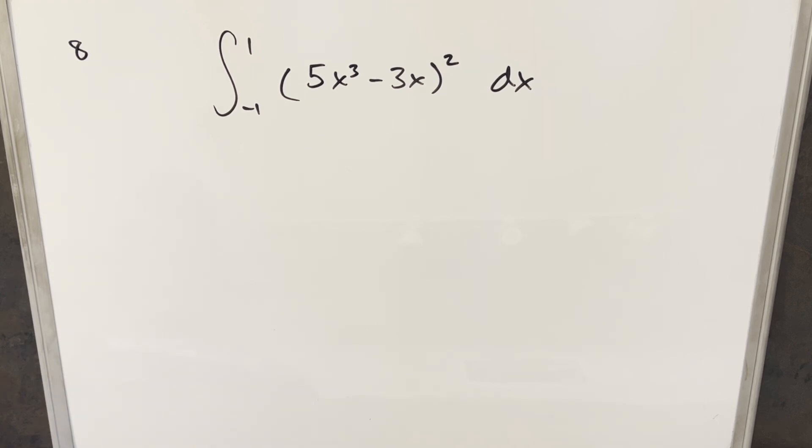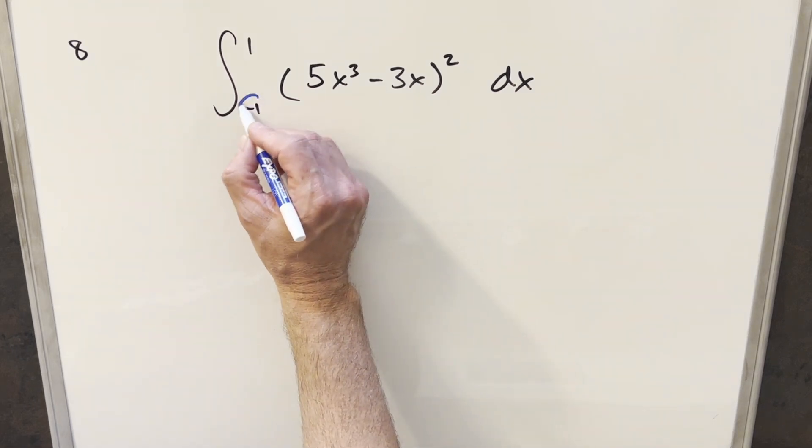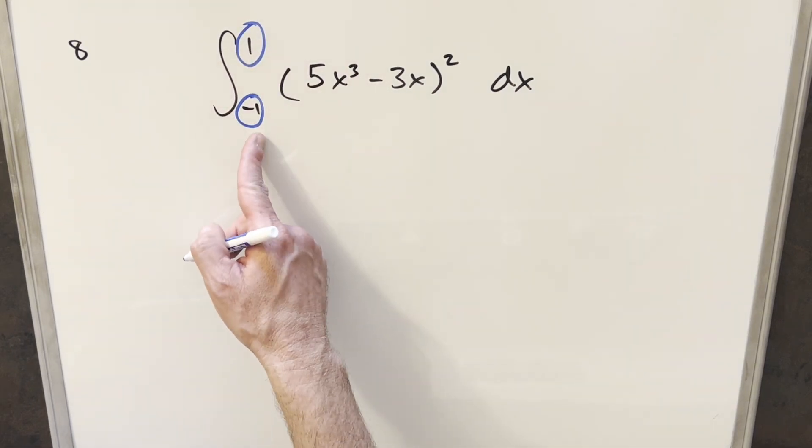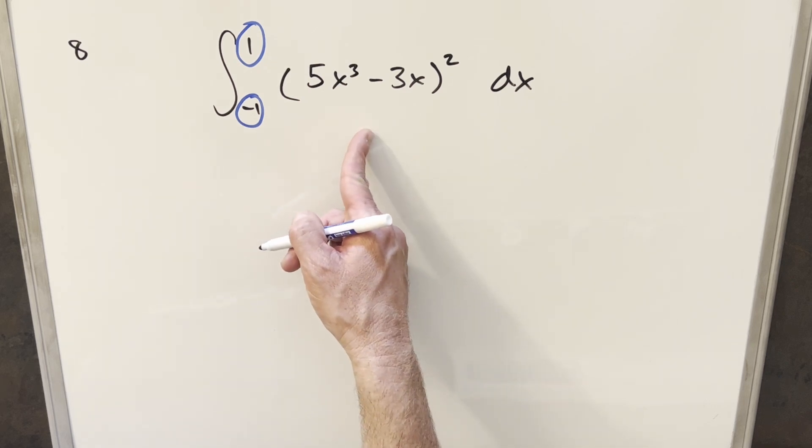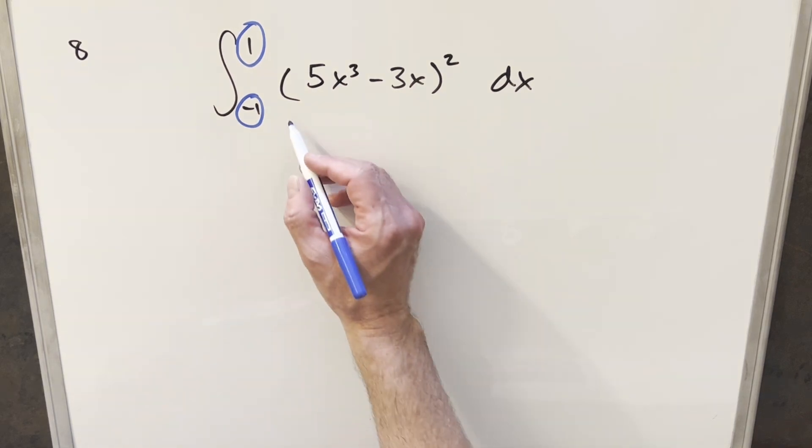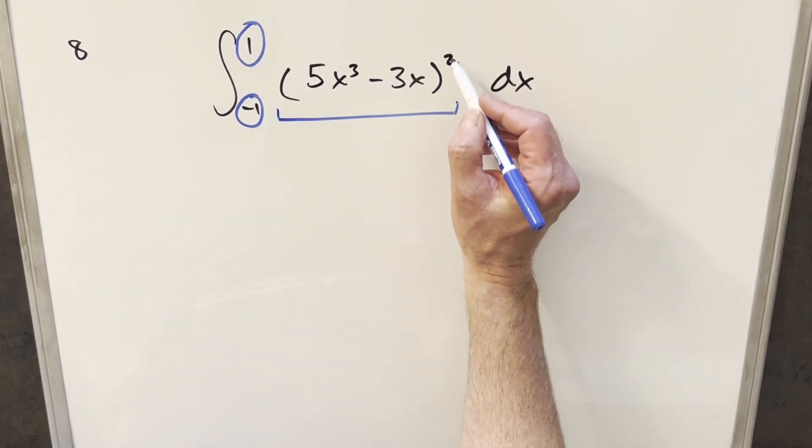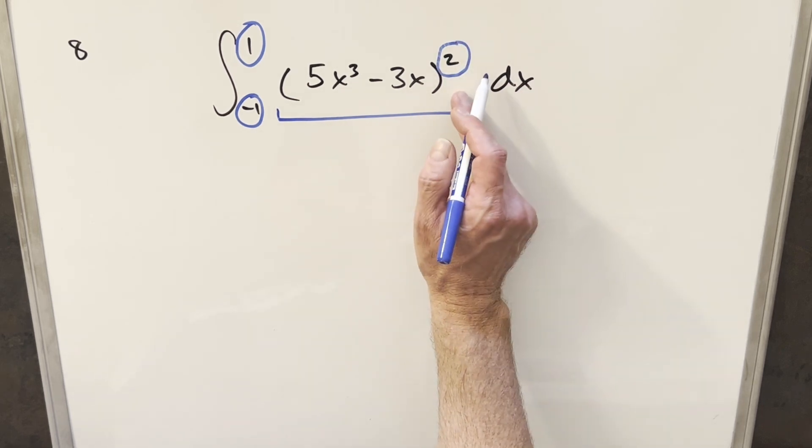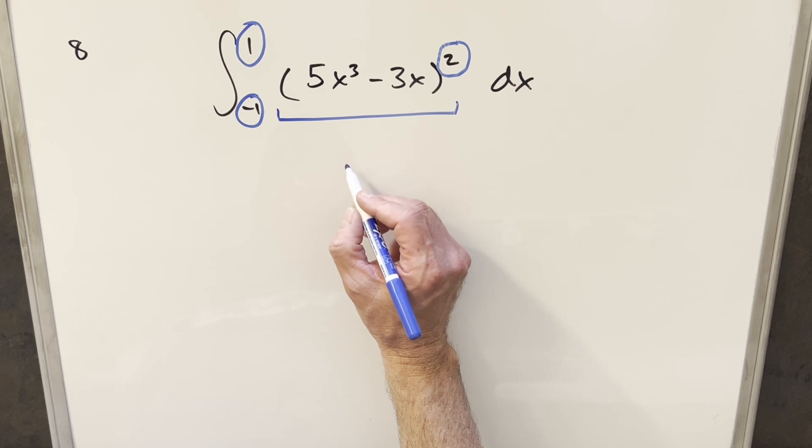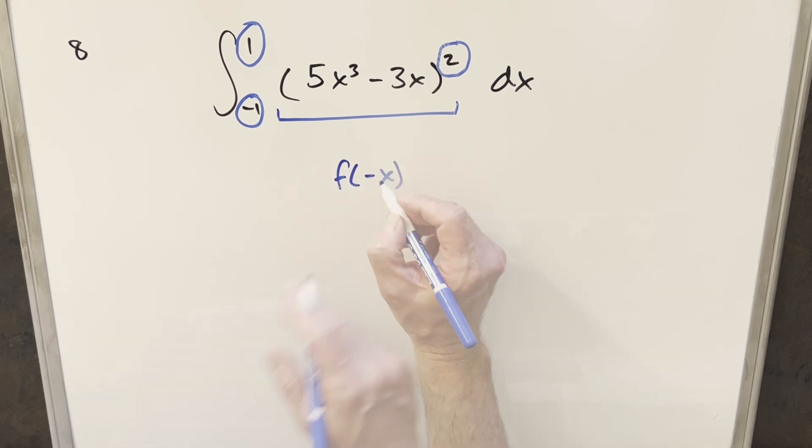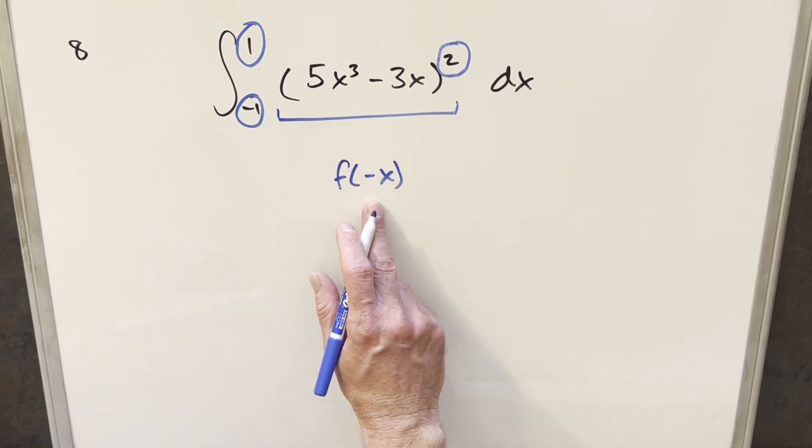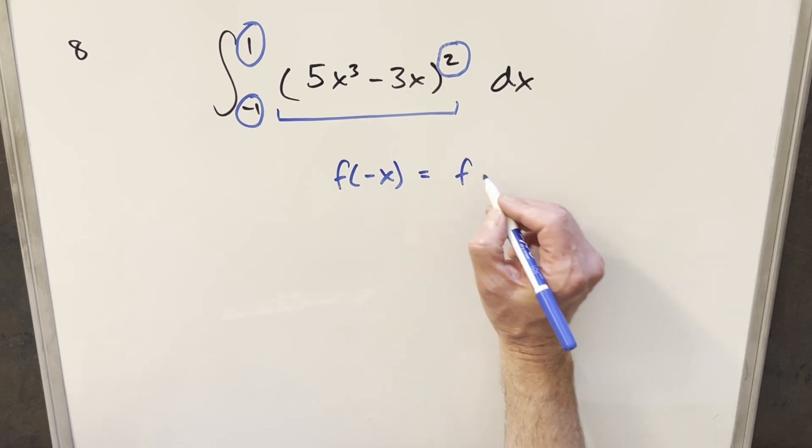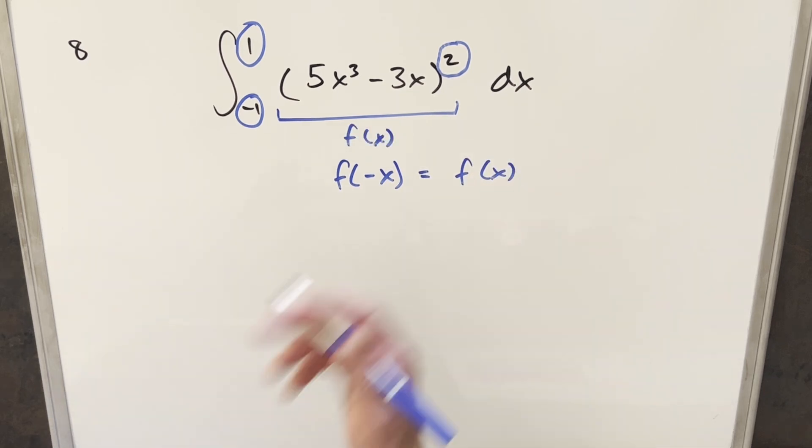Now to get started with this, there is one shortcut that I see here. It's a very small, minor shortcut, but we do have symmetric bounds here around 0, and we also have an even function here. Now, the reason why this is an even function is not just because we have it squared. That's not enough, but also the fact that we have an odd function inside the square. Let's just check this real quick. The definition for an even function is if we check f minus x, we should just get back f of x.